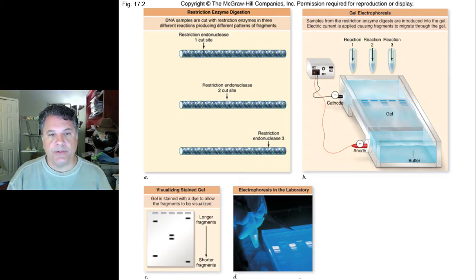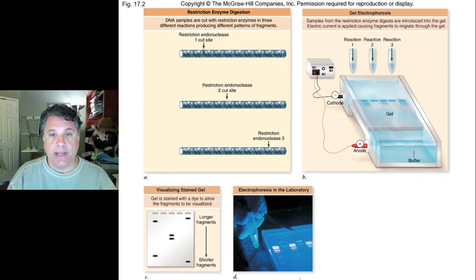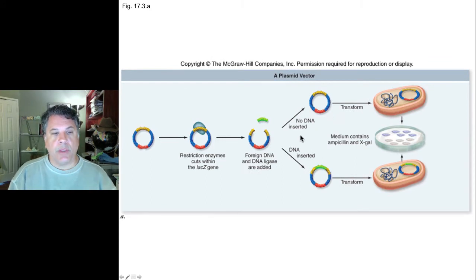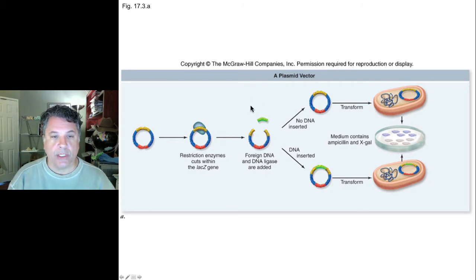We've considered some introductory biotechnology techniques, including digestion of DNA with restriction enzymes and the separation of restriction enzyme fragments via gel electrophoresis. Let's examine a few more techniques in manipulating DNA and biotechnological approaches. Let's say we wanted to clone a fragment of DNA from a particular source of interest — a gene of interest from some organism, humans for example, or whatever experimental organism you might be manipulating.